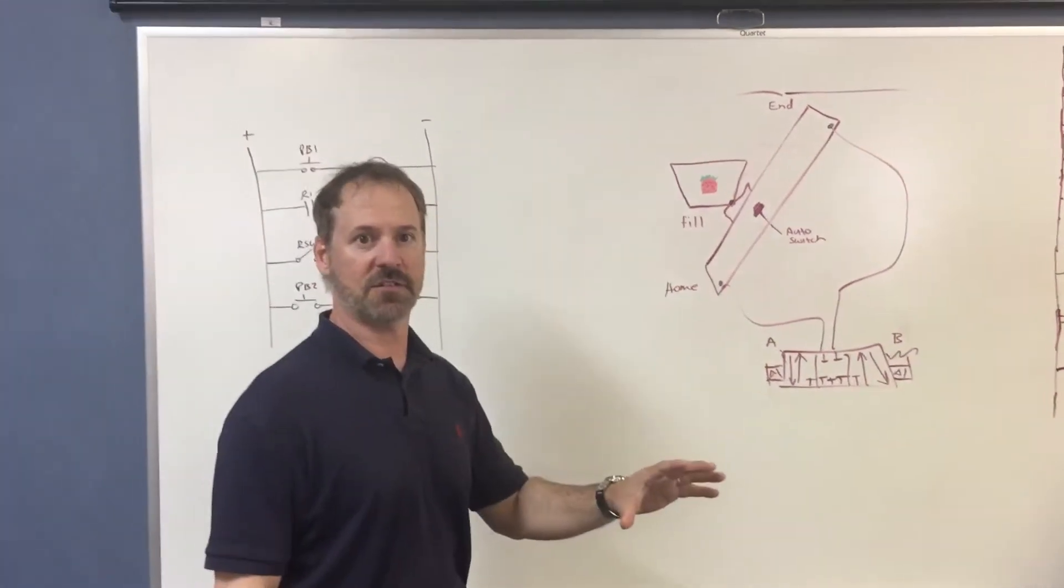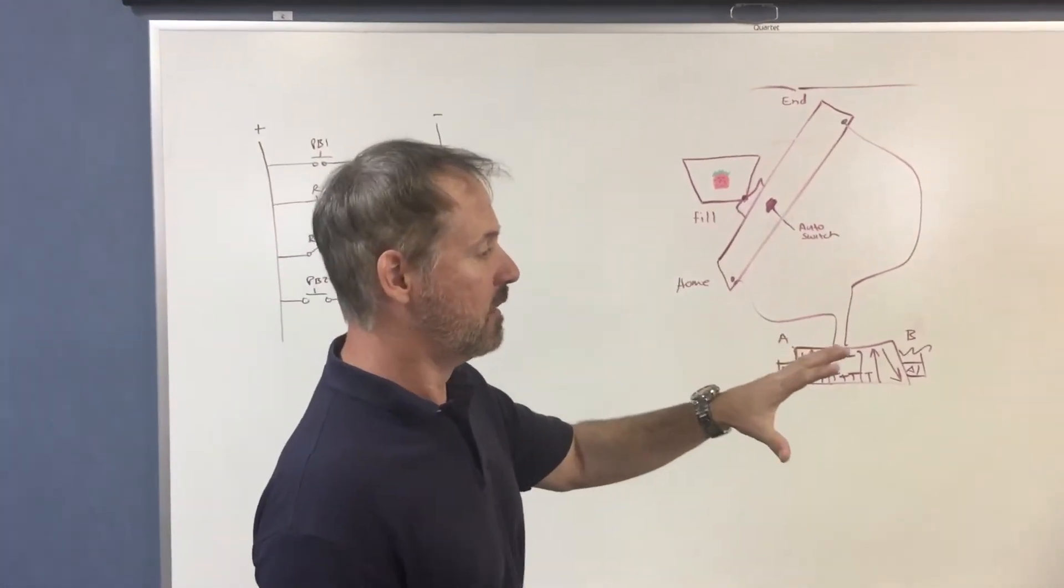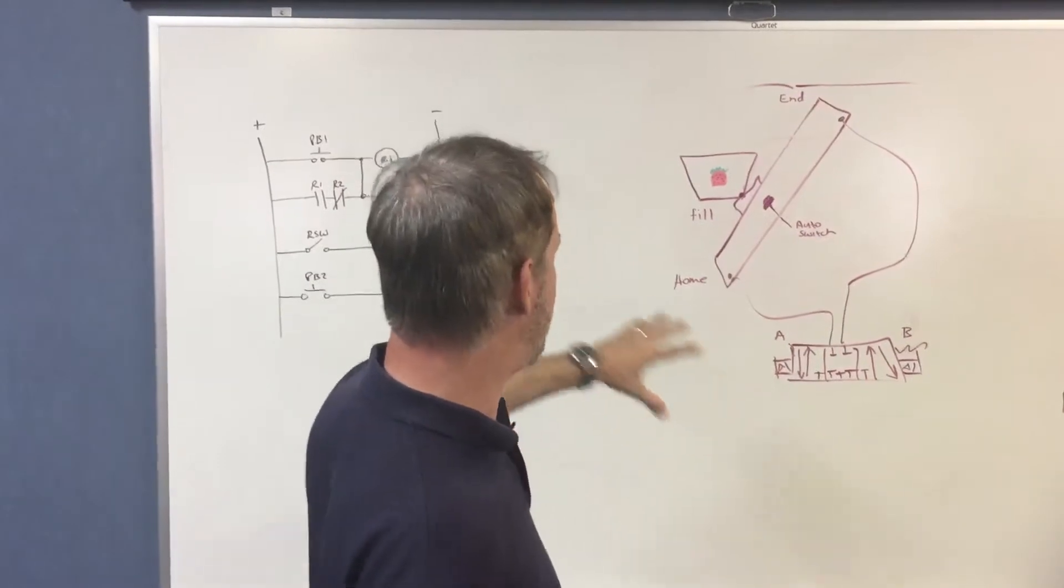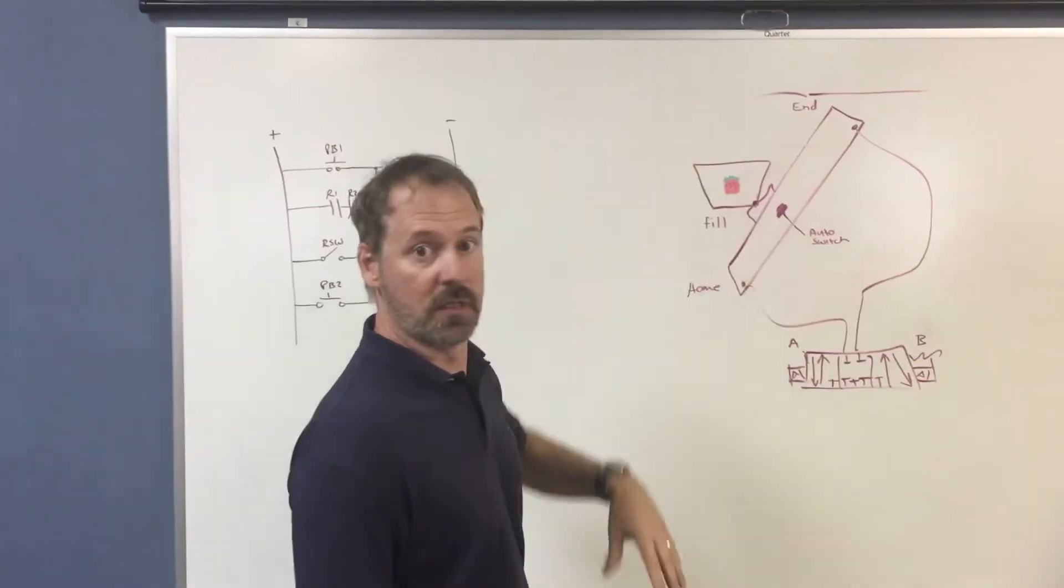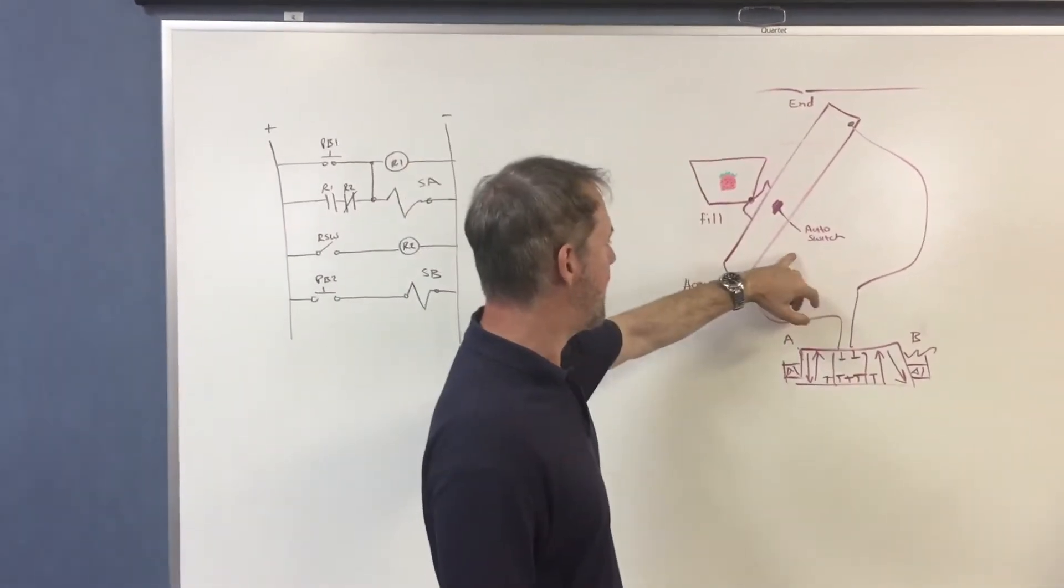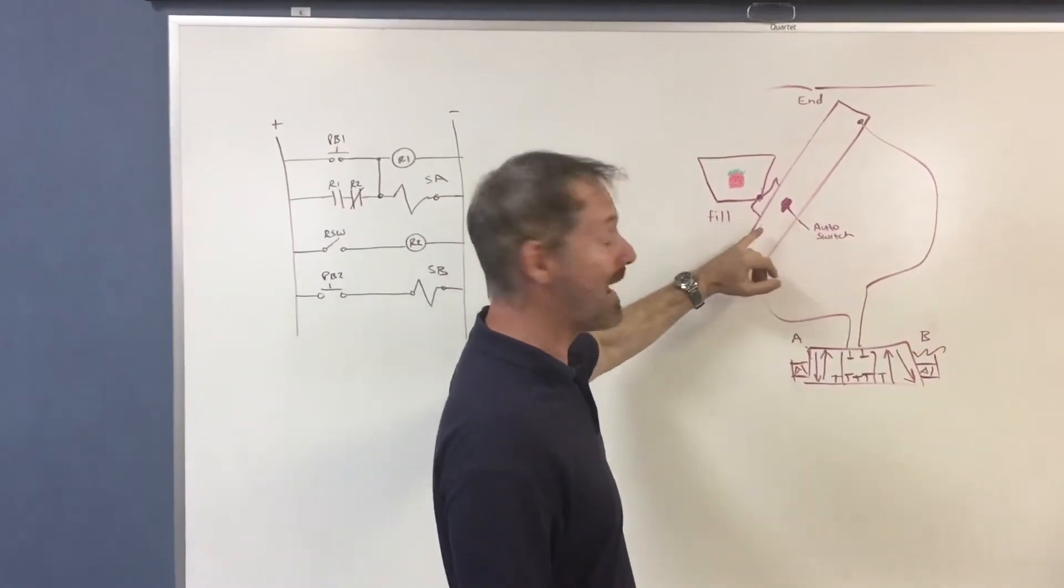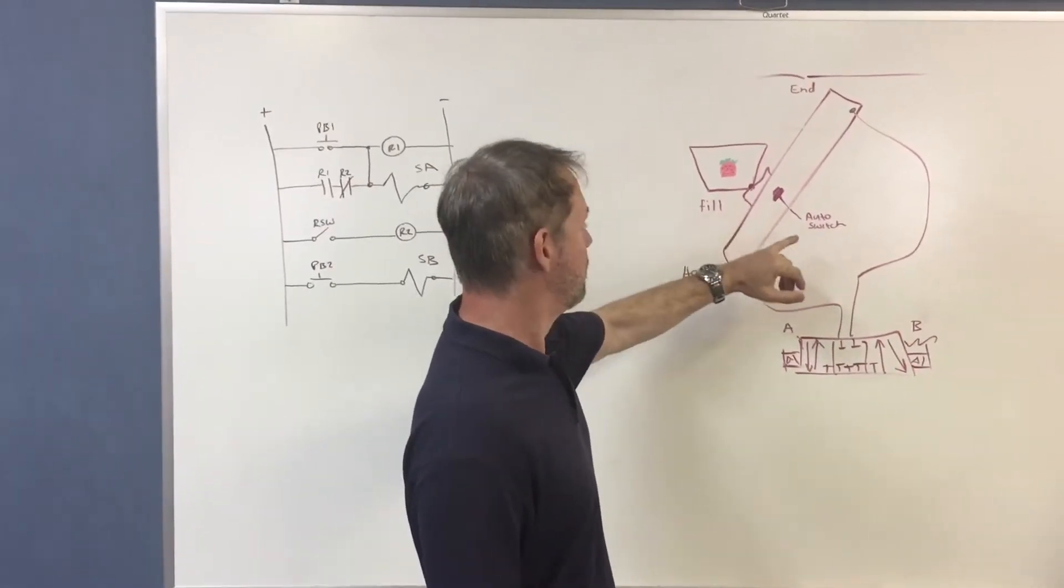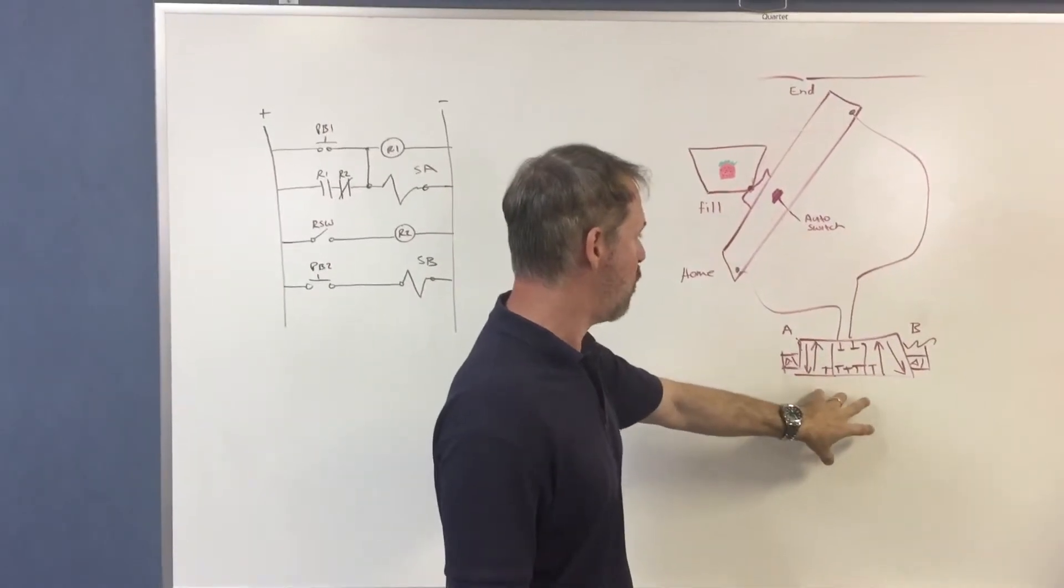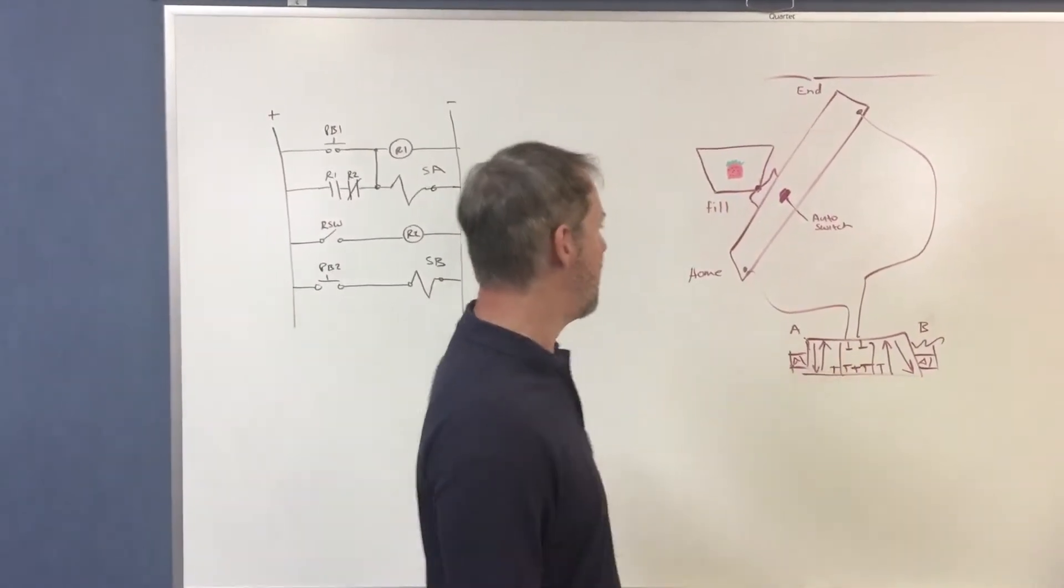All right, so as a follow-up to our meeting yesterday, we created a circuit to demonstrate the basket fill transport system with an intermediate stop using an auto switch that's triggered by a magnet in the actuator to stop a 5 or 3 position closed center valve.